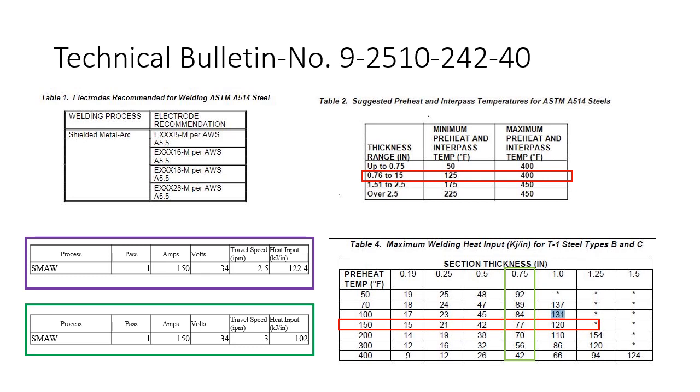Taking 120 kilojoules per inch as our maximum welding heat input, I threw in some numbers. With shielded metal arc welding, I went with 150 amps, 34 volts, and 2.5 inches per minute travel speed. That gave me 122 kilojoules of heat per inch, which is above our 120. So then I get my welder to speed up from 2.5 to 3 inches per minute travel speed. That takes me down from 122 to 102, so then I'm good.